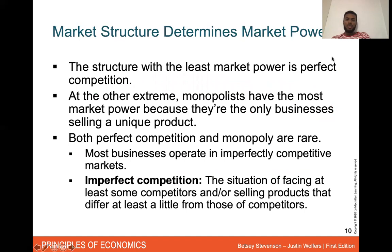Market structure determines market power. The structure with the least market power is perfect competition, while at the other extreme monopolists have the most market power because they're the only business selling a unique product. Both perfect competition and monopoly are rare — most businesses operate in imperfectly competitive markets, facing at least some competitors and selling products that are at least a little different from those of competitors.